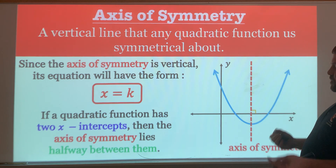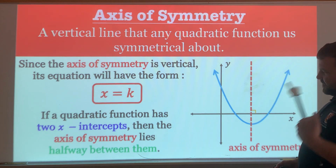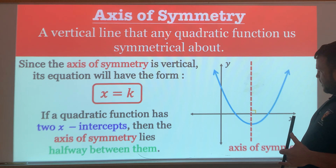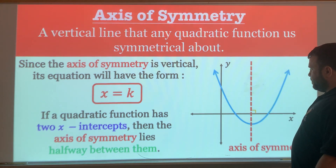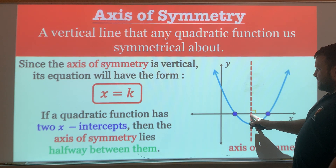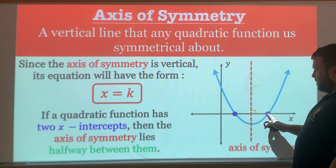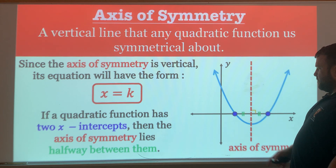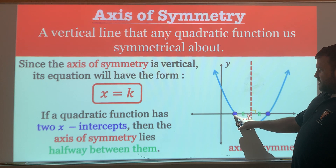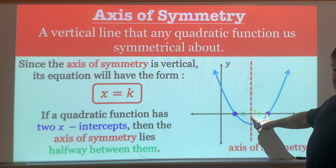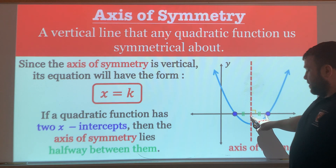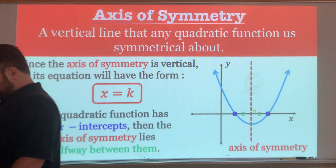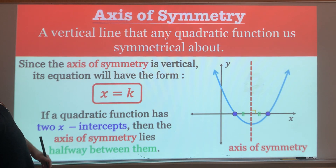A quadratic has two x-intercepts, but the axis of symmetry lies halfway between them. The distance from the axis of symmetry to the first x-intercept is equal to the distance from the axis of symmetry to the second x-intercept.